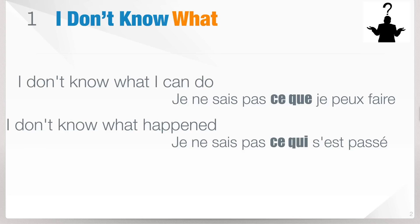So why this difference in French? In the first example, after 'what' we've got a subject — the subject is 'I.' When you have a subject after 'what,' you use ce que. In the second example, you directly have the verb with no subject. That's why 'what' is ce qui.